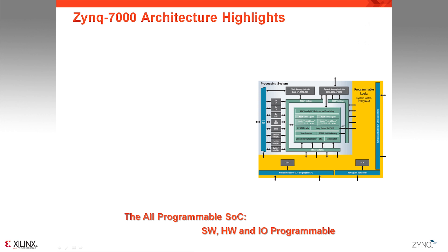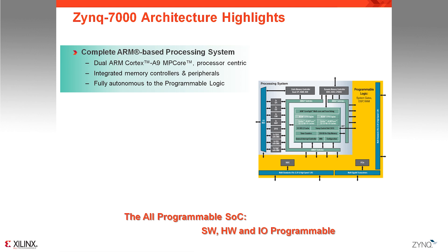Let's take a top-down approach and start from a high-level view of the architecture. Zynq 7000 was called an All-Programmable SoC because it is the first platform to offer software, hardware, and I/O programmability into a single system on chip. The software programmability is offered through a complete ARM-based processing system based on a dual-core ARM Cortex-A9. This is a processor-centric architecture, which means that Zynq 7000 devices boot and operate like any other processor. The processor does not need the programmable logic to be configured in order to operate, and being on separate power planes, it does not even need to be powered on, offering high flexibility and improved power management.